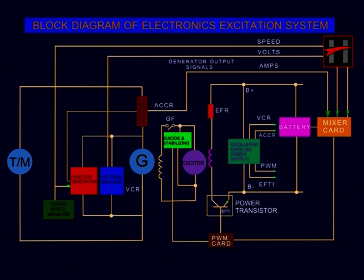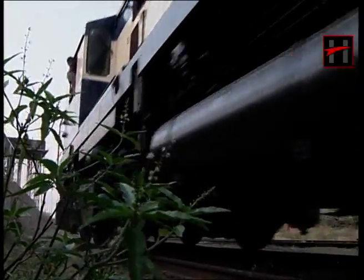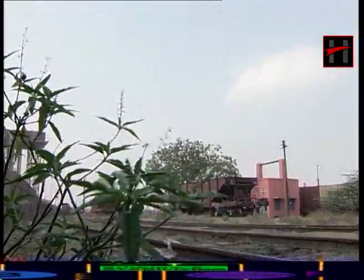This is the block diagram of the electronics excitation system of the diesel locomotive. The function of the excitation system is to ensure that the traction alternator or the traction generator demand matches the capability of the diesel engine in all the eight notches.